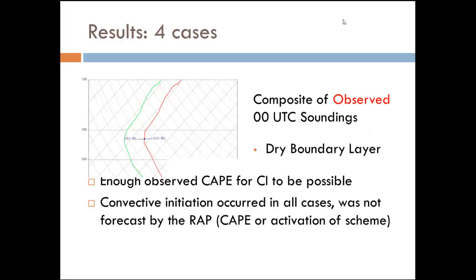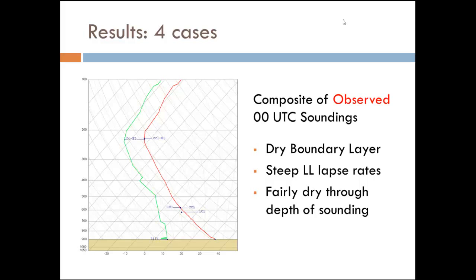In all four cases there was enough observed CAPE for convective initiation to be possible, and it did occur in all of those cases. But the way the RAP was handling it, we may not have anticipated it. Also it wasn't just the low CAPE — the RAP also never activated its convective parameterization; it just didn't happen at all. If we look at a composite sounding for those four worst cases — these are the observed 0Z soundings composited together — you see a very dry environment with very steep low-level lapse rates. The boundary layer is also very dry, so you end up with a super-high LCL and high LFC.